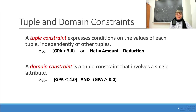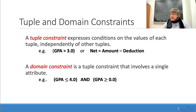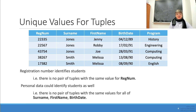A domain constraint is a tuple constraint that involves a single attribute. For example, GPA less than or equal to 4 and GPA greater than or equal to 0.